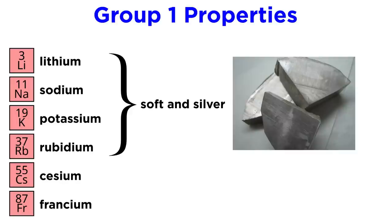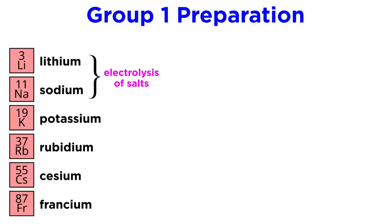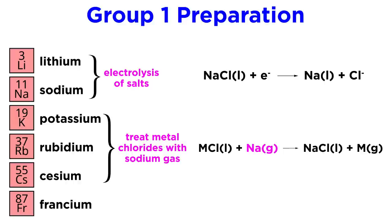Lithium, sodium, potassium, and rubidium are all soft and silver, while cesium has a gold sheen. In terms of preparation, lithium and sodium can be prepared via electrolysis of salts. Molten sodium chloride will undergo reduction to form liquid sodium and chloride ions. Potassium, rubidium, and cesium can be prepared by treating their respective metal chlorides with sodium gas. These are then purified by distillation.